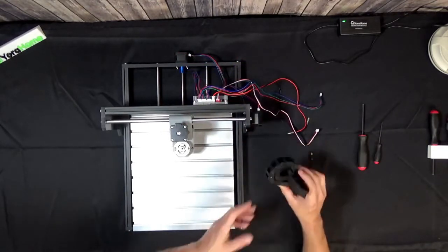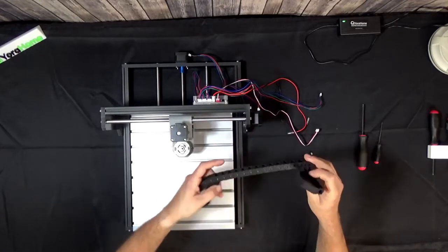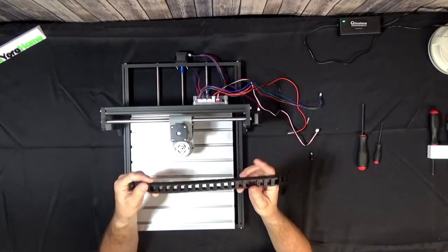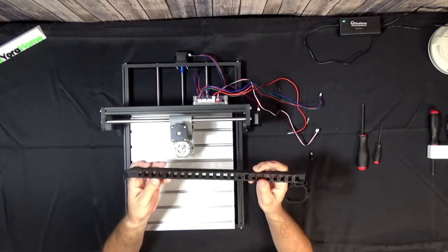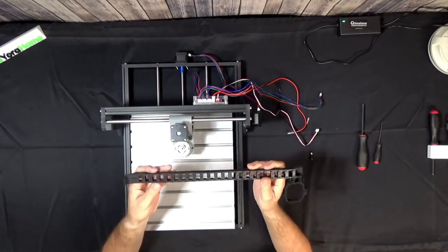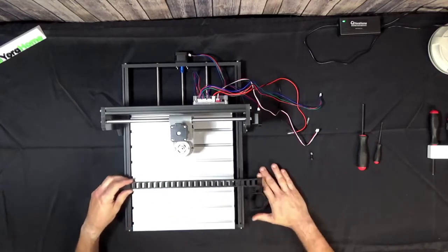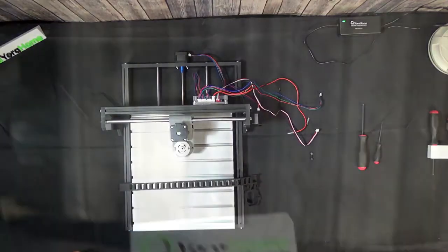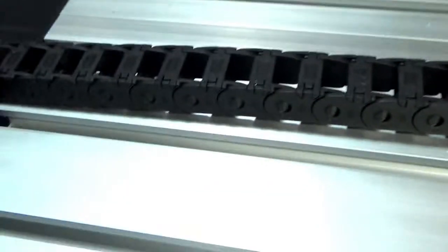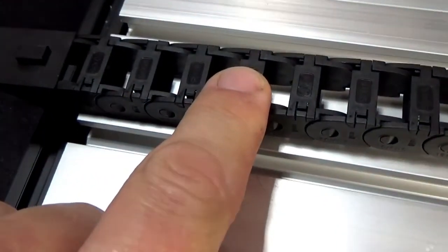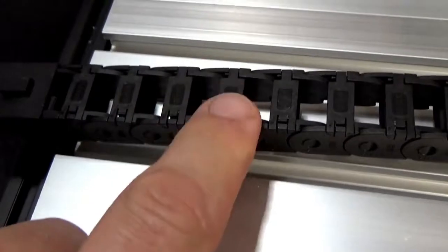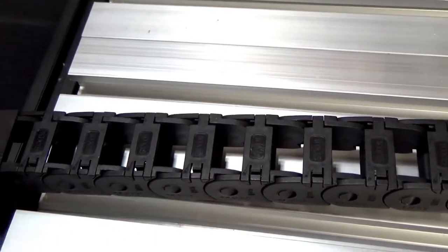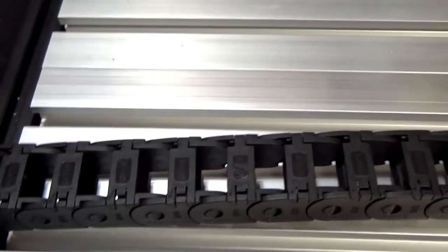You'll want to unroll your drag chain and you'll notice on one side there are small gates that open up. I can show you with this camera. So you will see there's these small gates that open. The side with the two tabs is the side that you want to open.